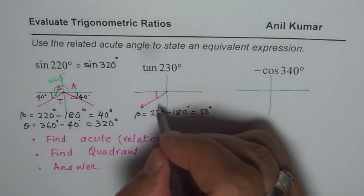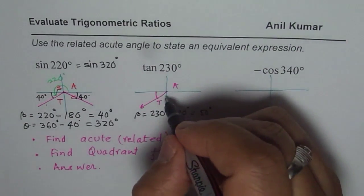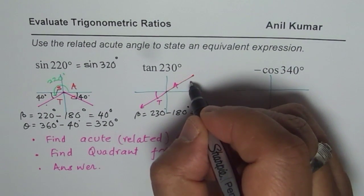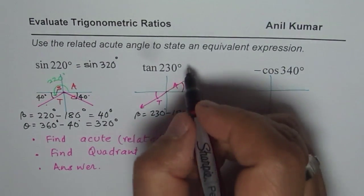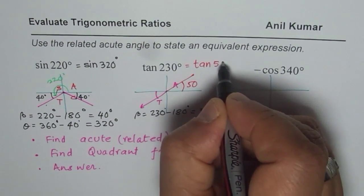For tan, tan is positive here and all are positive here. Therefore, the equivalent will be the triangle formed in quadrant 1. The acute angle for us is 50 degrees. And so we get our solution. So this will be tan of 50 degrees.